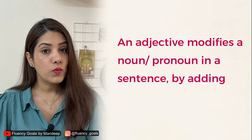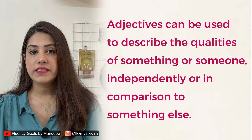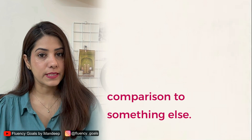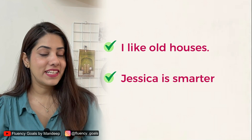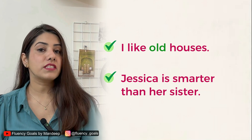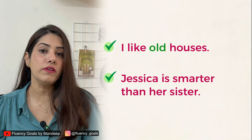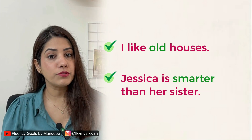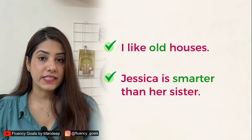An adjective is a word that modifies a noun or a pronoun. Adjectives can be used to describe the qualities of something or someone independently or in comparison to something else. Consider these sentences: I like old houses. Jessica is smarter than her sister. In the first sentence, 'old' is an adjective because it is describing the noun 'house'. In the second sentence, 'smarter' is used to compare the two nouns, Jessica and her sister.